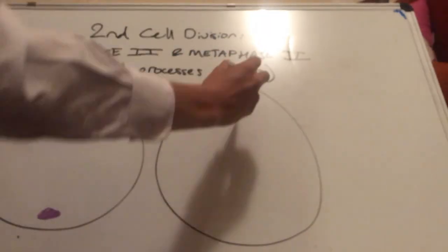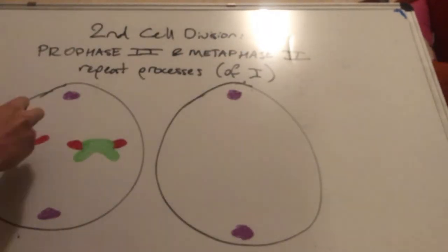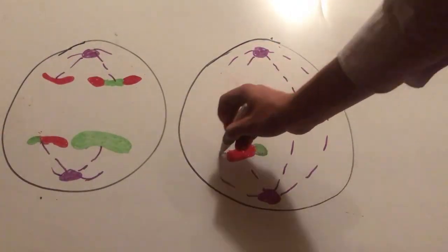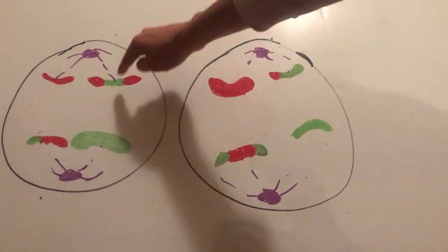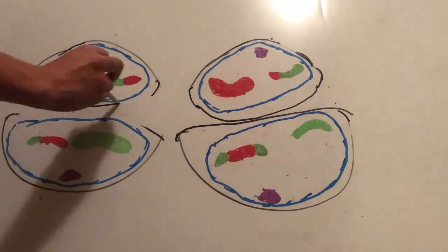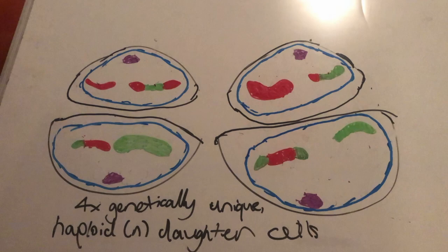The second cell division begins with prophase 2 and metaphase 2 repeating their processes, now with two haploid daughter cells. In anaphase 2, the sister chromatids begin to separate as individual chromosomes to opposite poles, and in telophase 2 and cytokinesis, the membrane forms and the cleavage furrow finally creates four genetically unique haploid daughter cells.